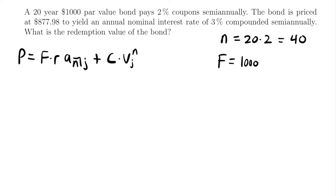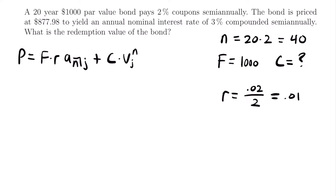In this case, we're asked what the redemption value is, so we can't assume C equals F — C is the unknown we're solving for. The bond pays 2% coupon semi-annually, so the coupon rate R equals 0.02 divided by 2, which is 0.01. We're told the price is $877.98, so P equals $877.98.